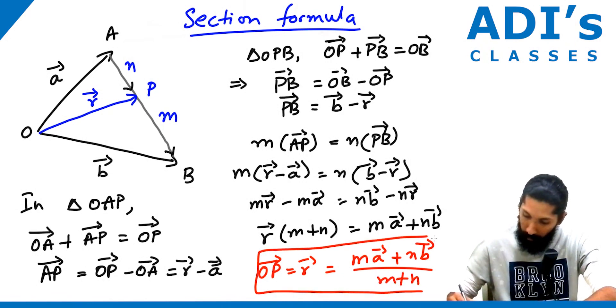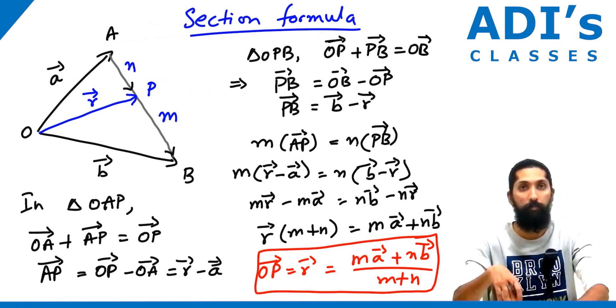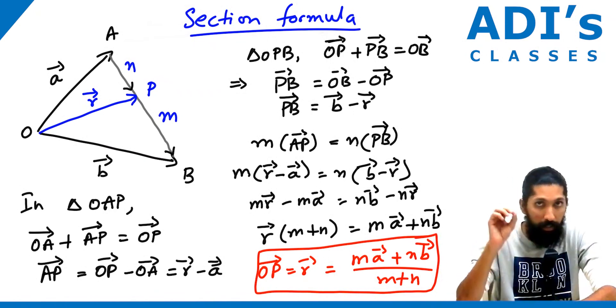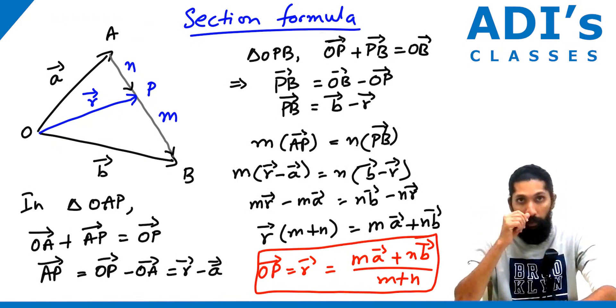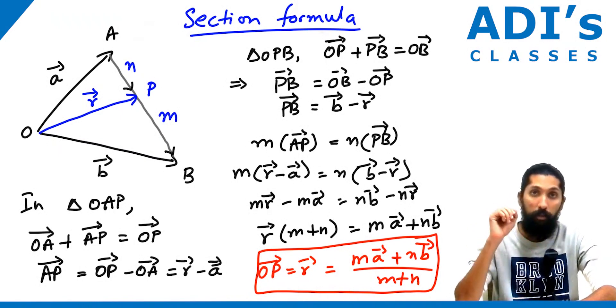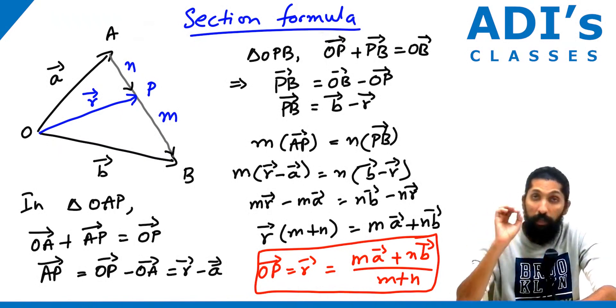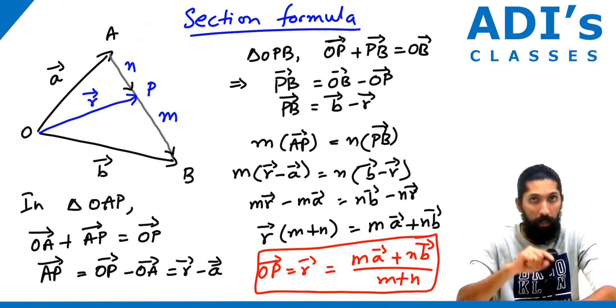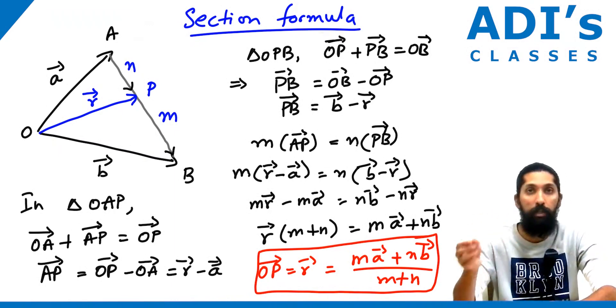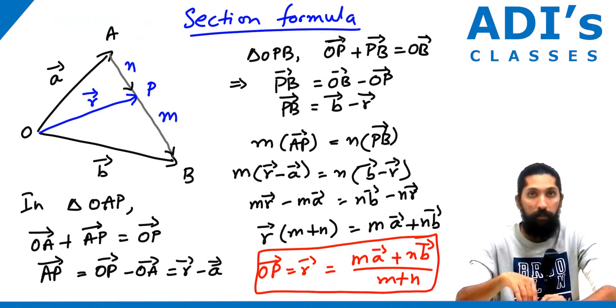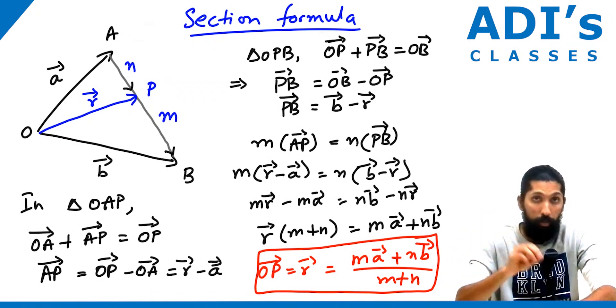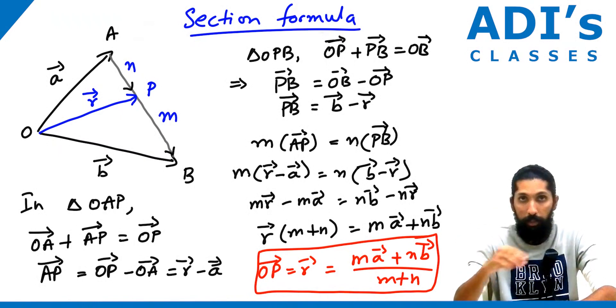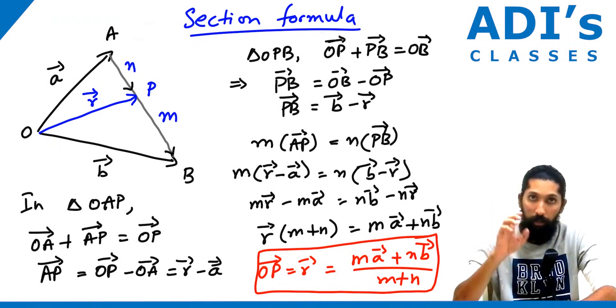This is the section formula. If you have any vector OP where point P divides the line joining AB in ratio M to N, then the position vector is given by this formula: (M times A plus N times B) divided by (M plus N).